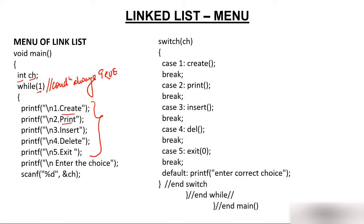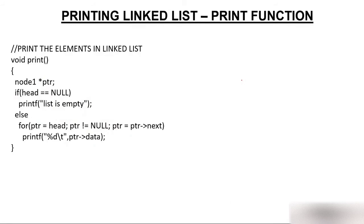So we'll press 2. It is asking to enter the choice — I press 2, so 'ch' will save 2. Then switch will have 2, it will jump to case 2. Case 2 is calling the print function. This is how the menu is working.